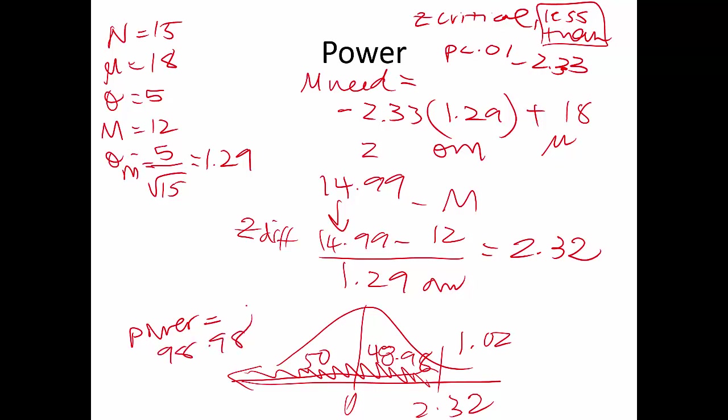A power of 98.98% is excellent — that means there's almost a 99% chance of rejecting the null when there truly is a difference between the means. Remember, the definition of power is the probability of rejecting the null when there truly is a difference. That concludes the exam 2 review. If you're still struggling, watch the chapter 7 and 8 examples where more of these types of problems are covered.